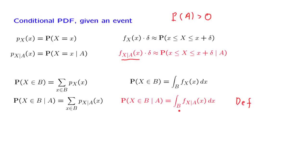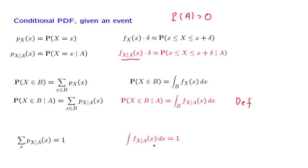Probabilities need to sum to 1. This is true in the discrete setting, and by analogy it should also be true in the continuous setting. This is just an ordinary PDF, except that it applies to a model in which event A is known to have occurred. But it still is a legitimate PDF — it has to be non-negative, and it needs to integrate to 1.